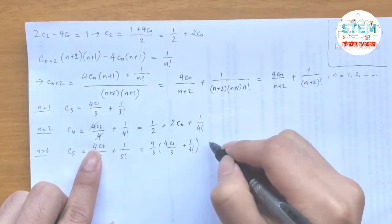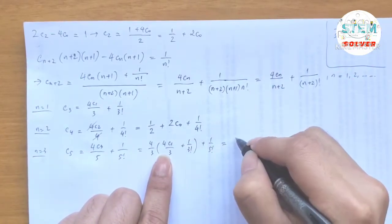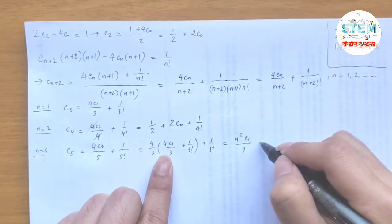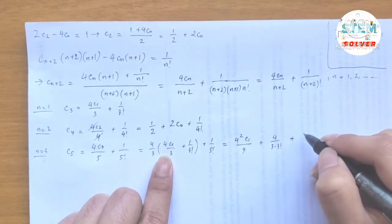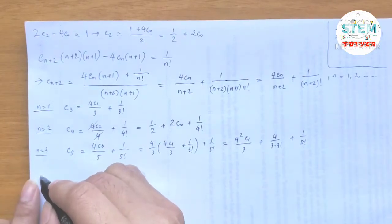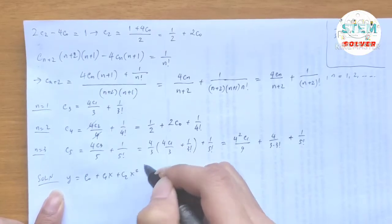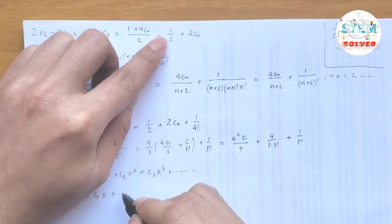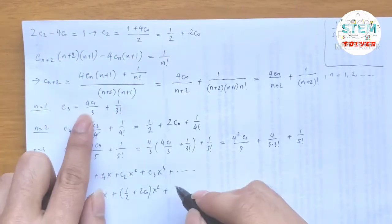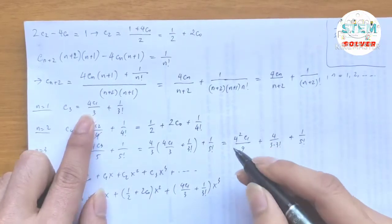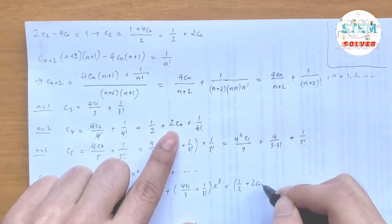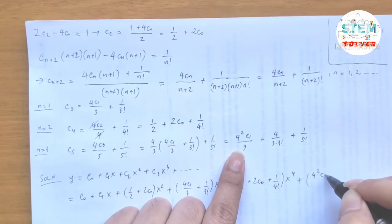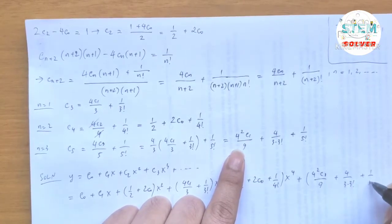Now writing out the full solution y. We don't know c₀ or c₁ so we keep them. The terms are: c₀, c₁ · x, c₂ · x² = (one-half + 2c₀) x², c₃ · x³ = (4c₁/3 + 1/3!) x³, c₄ · x⁴ = (one-half + 2c₀ + 1/4!) x⁴, c₅ · x⁵ = (16c₁/15 + 4/(5·3!) + 1/5!) x⁵, plus higher order terms.